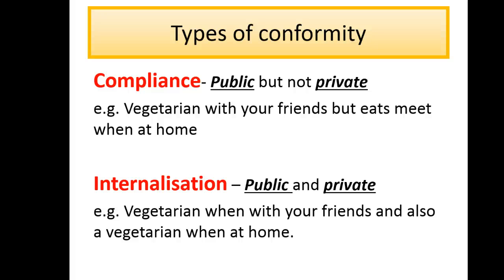What you need to know are the two types of conformity. If you have an older textbook of psychology, you'll notice there are other types as well. However, just for this specification, which is AQA, you only need to know the two of them. When you look at compliance, make sure you include the key words: public and private — and the same for internalisation. Compliance is where we change our behaviour when we're in front of other people, but when we're at home we don't tend to do it. Internalisation means you change your behaviour both publicly and privately. I've got some examples there for you to take a look at — try and use examples when you're explaining the two types of conformity.